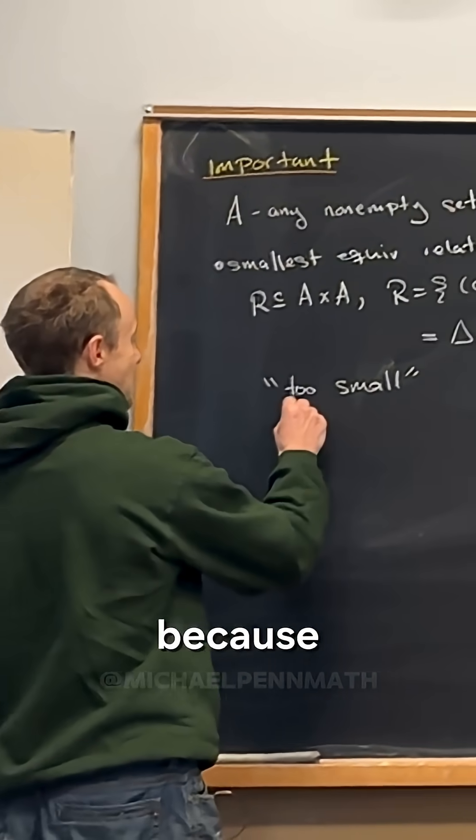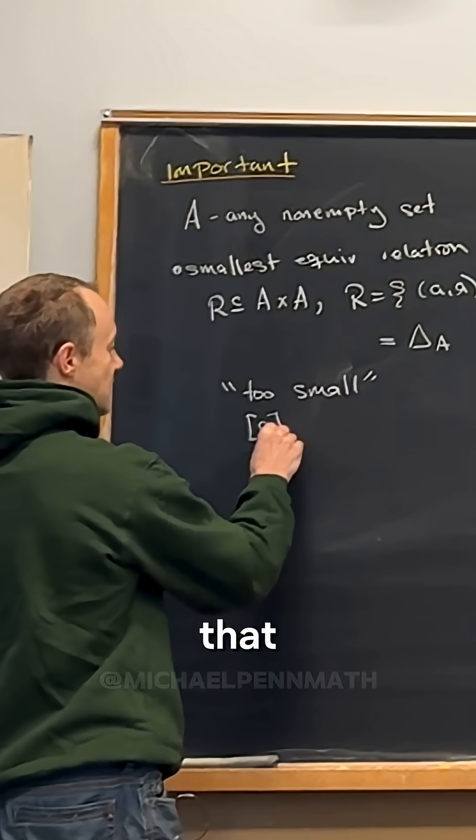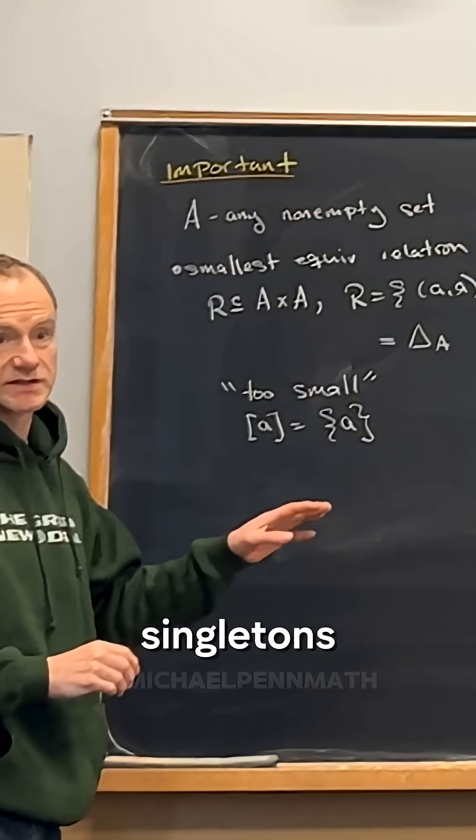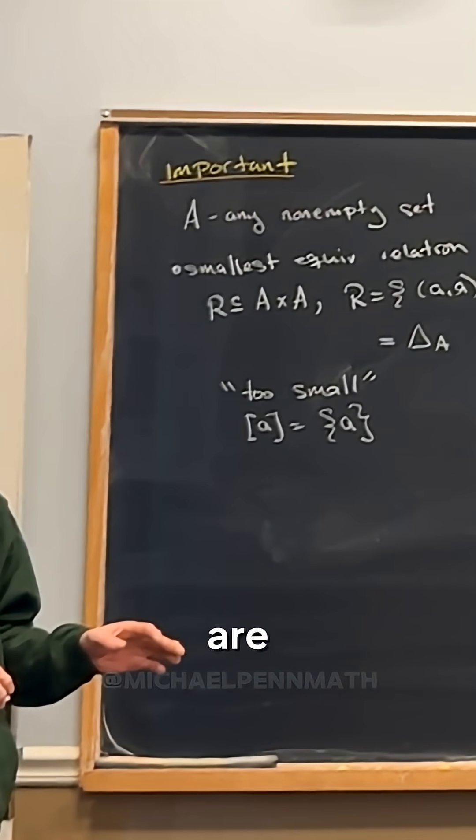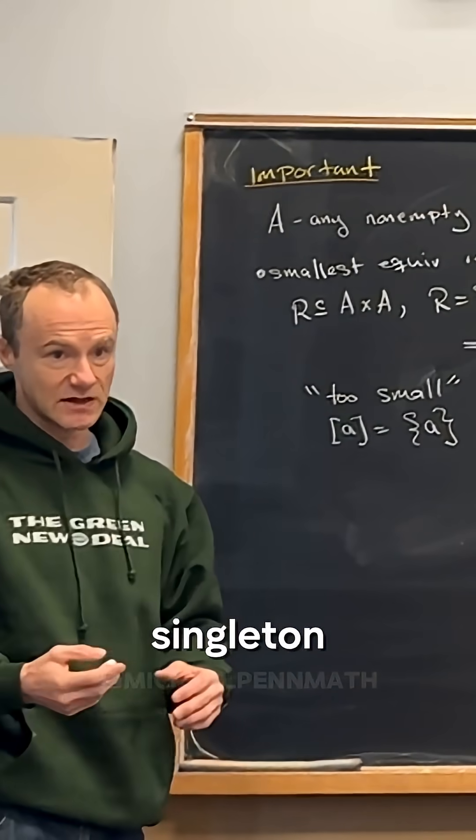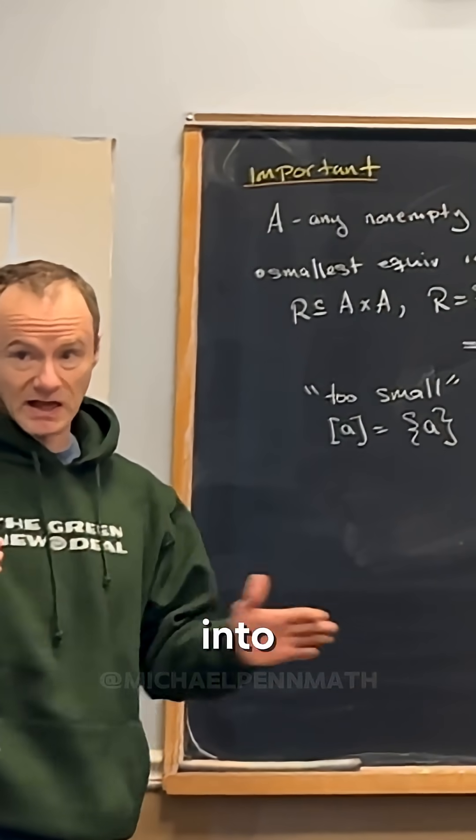And that doesn't simplify the set because notice that the equivalence classes here are just the singletons. Remember the equivalence classes are everything equivalent to a point. But if the equivalence class is a singleton, you didn't cut your set up into any pieces.